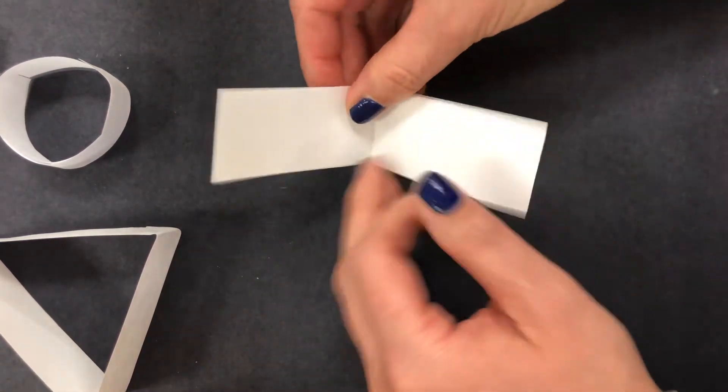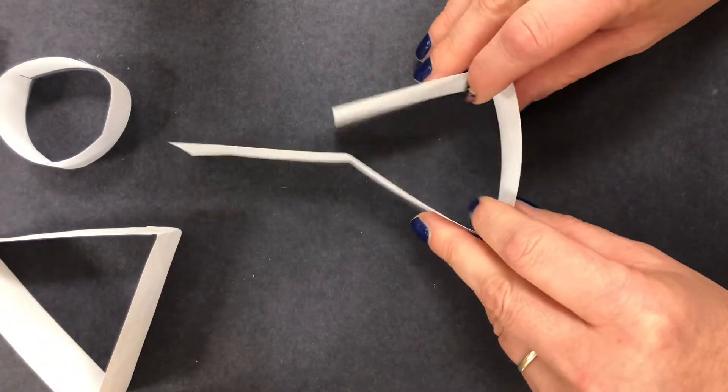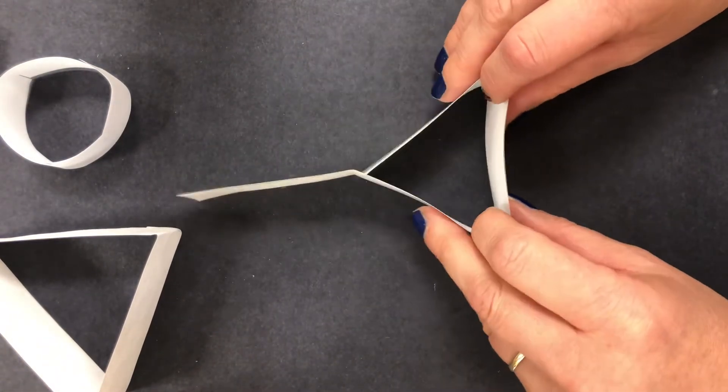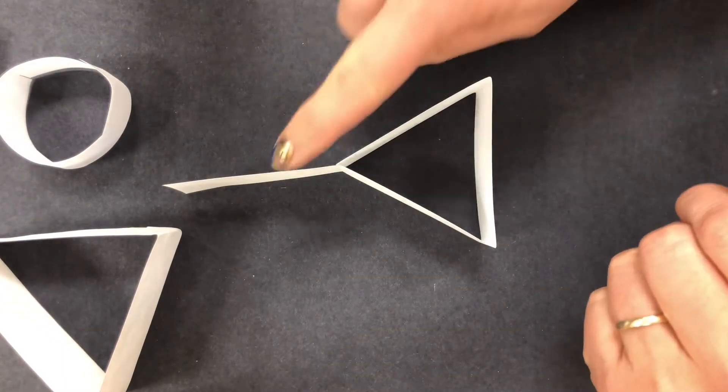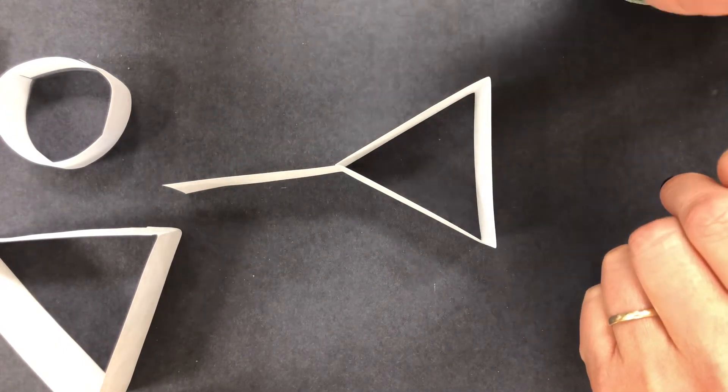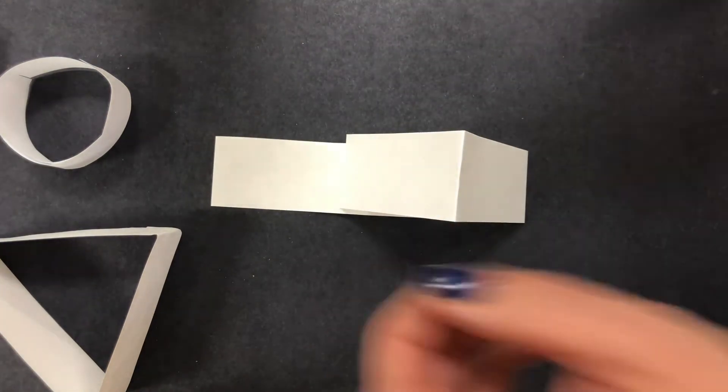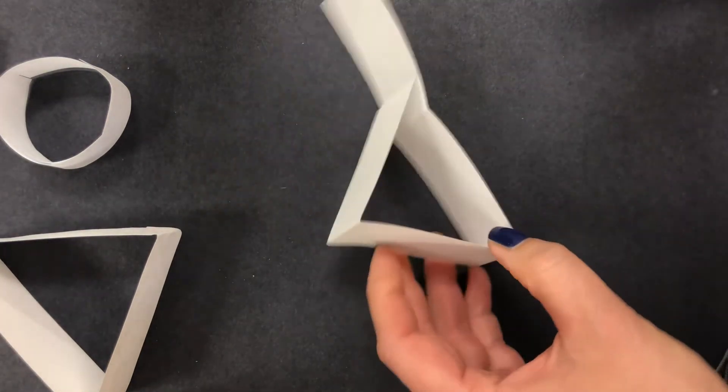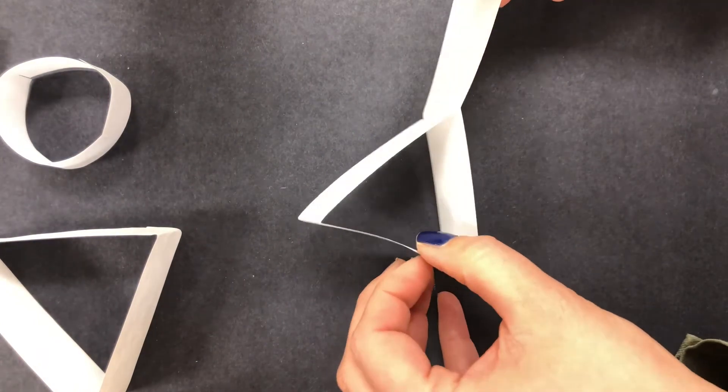When I unfold it, that gives me four equal pieces and you can see my triangle right here. This fourth side I'm going to use to overlap to glue it down. So I'm going to take and prop it up on its side.